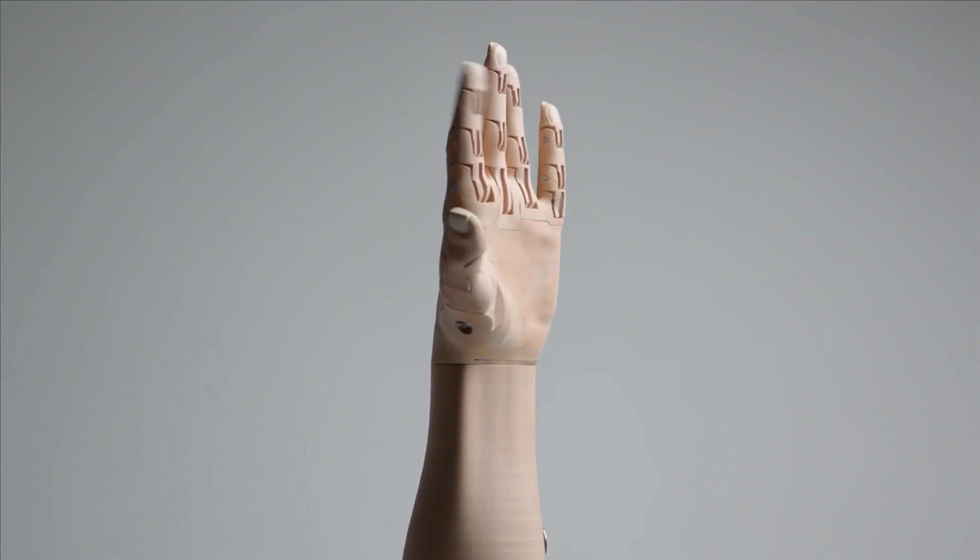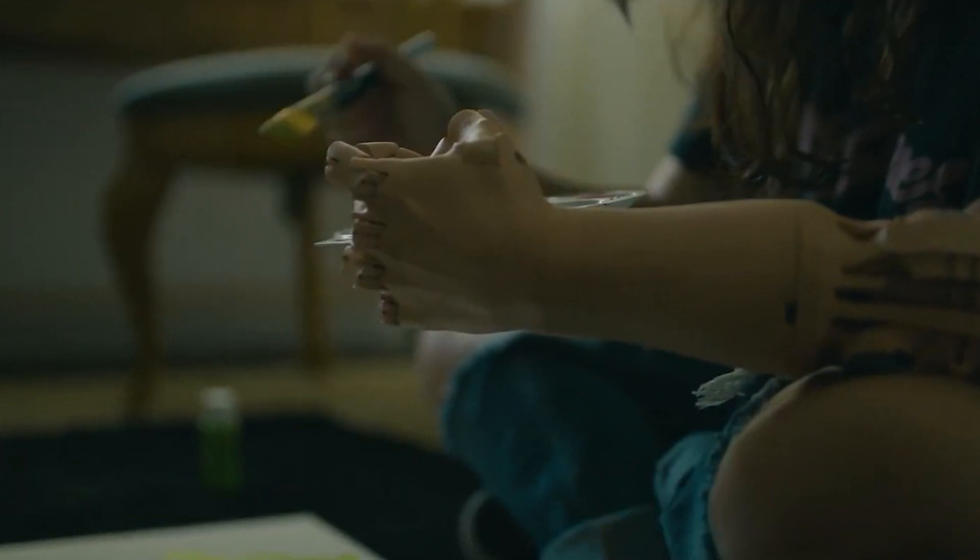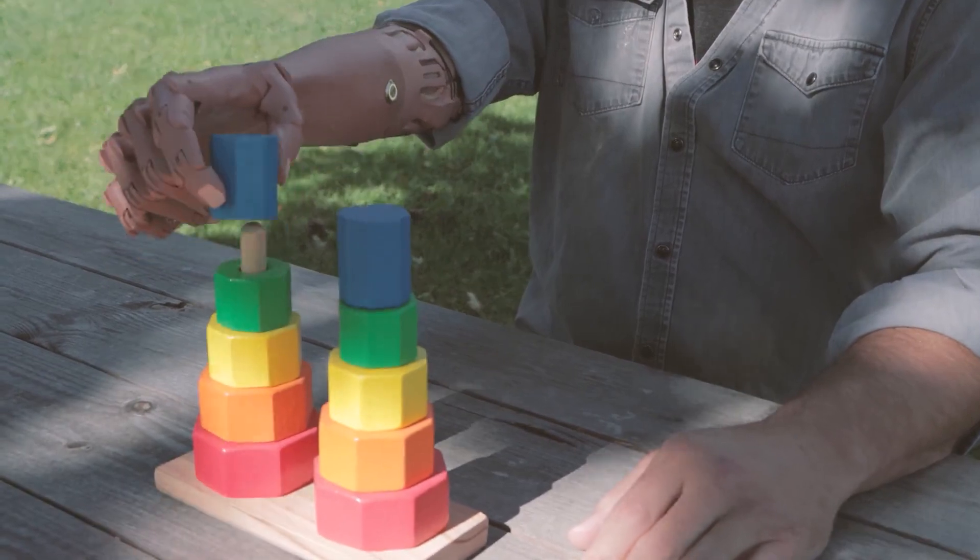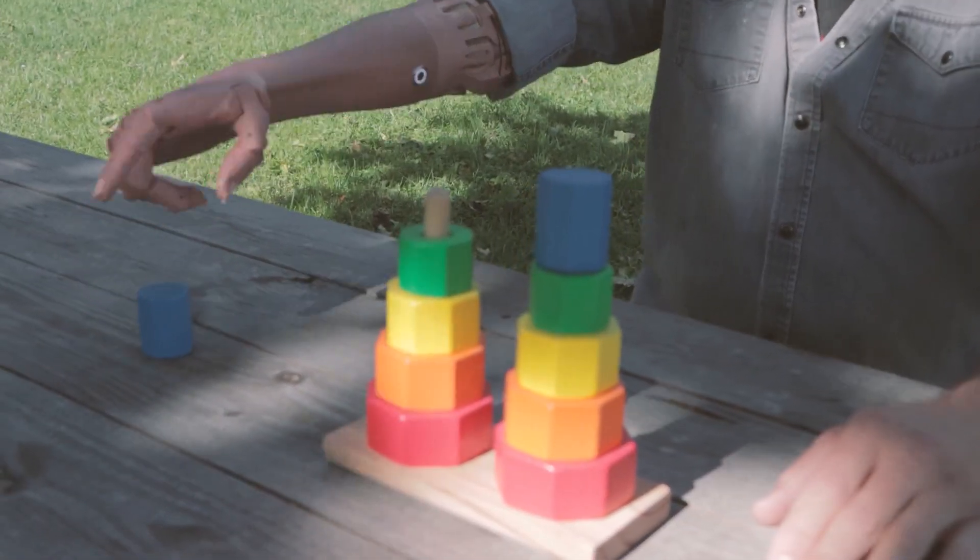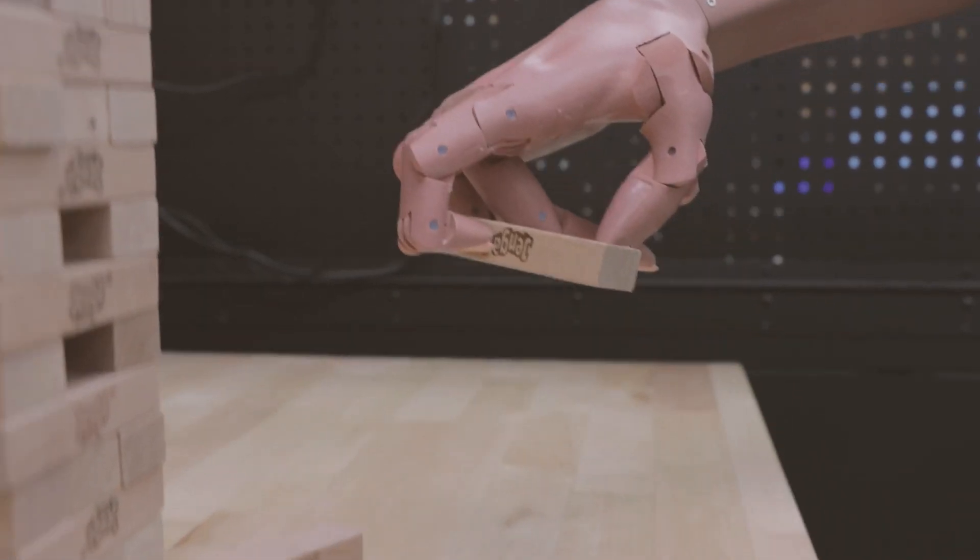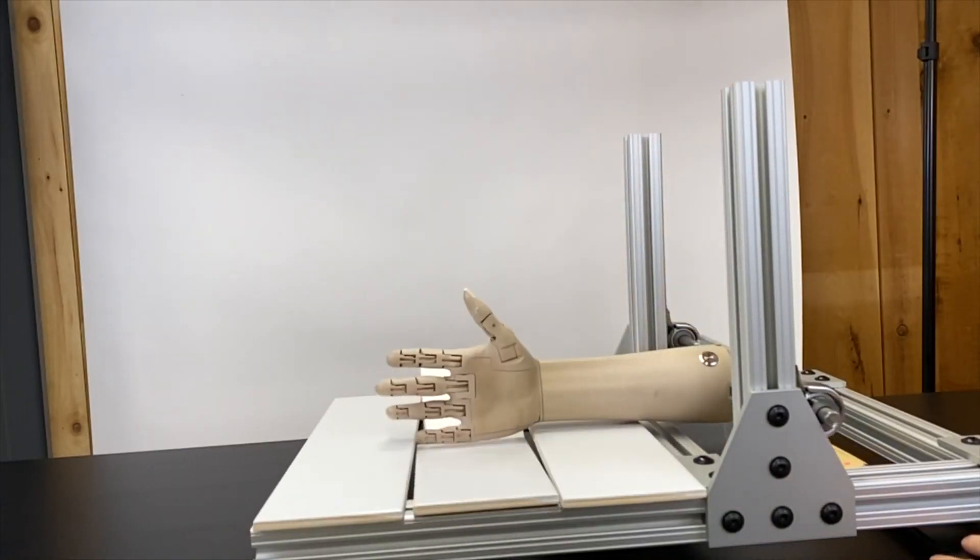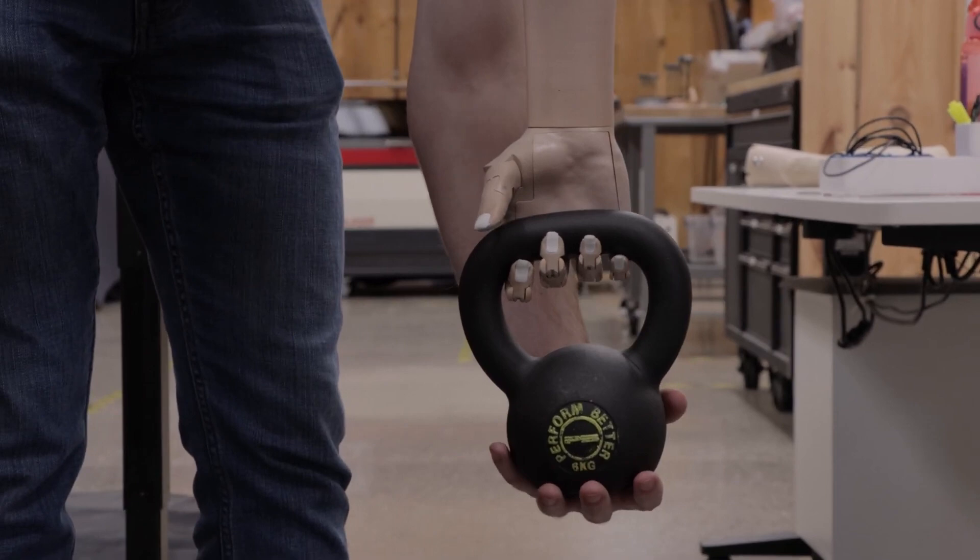According to LaChapelle himself, the TrueLimb prosthesis is not only super customized, but also incredibly comfortable and will almost not attract the attention of others. When creating an artificial arm, skin color, weight, shape, and size are taken into account. What's more, this prosthesis is much stronger than a human hand and can hold up to 22 kilograms of weight.